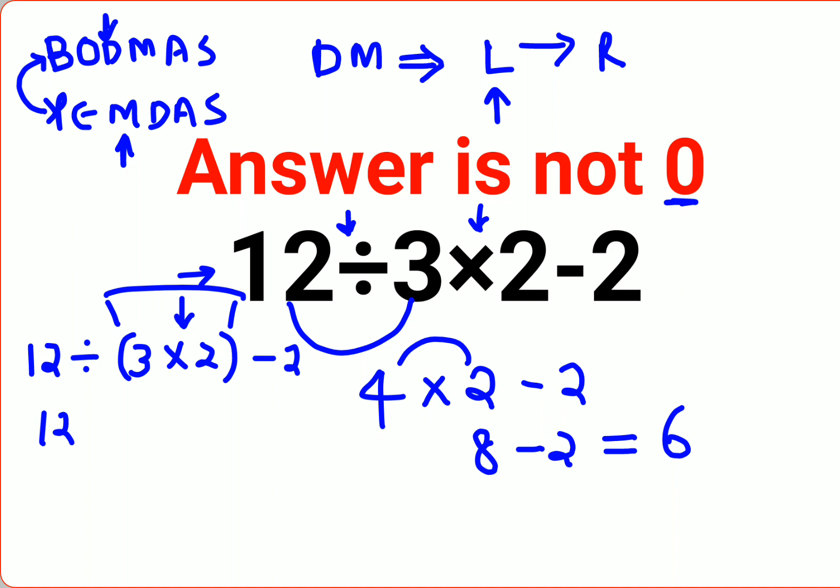So in BODMAS and PEMDAS, the first thing which we need to do always is brackets or parenthesis. So first we will do 3 into 2 which gets you 6 minus 2. And then you would have done 12 divided by 6, that gets you 2 minus 2. Here the answer would have been 0.